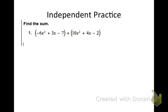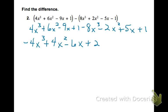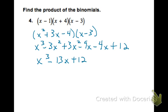Pause the video and do the independent practice, then come back and check your work. When you add the polynomials, you should get 4X squared plus 7X minus 9. The difference should be negative 4X cubed plus 4X squared minus 6X plus 2. The error in number 3 is that the negative was not distributed all the way through — those terms should be plus 15X cubed and minus 21X squared. Multiplying the three binomials gives X cubed minus 13X plus 12.